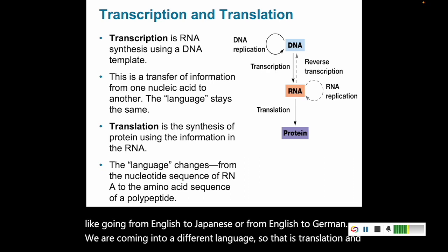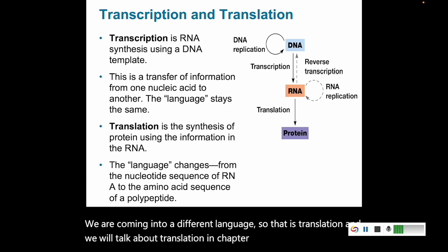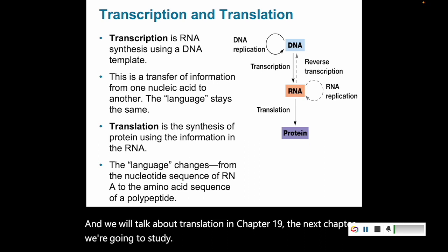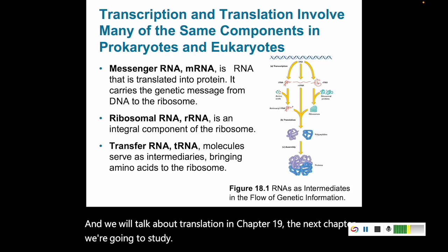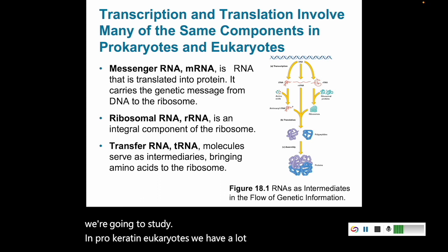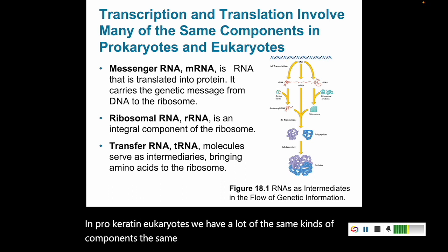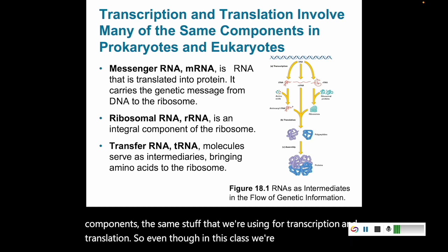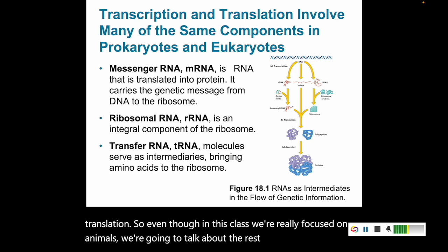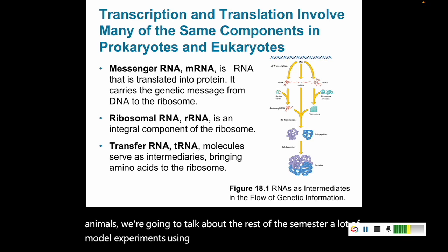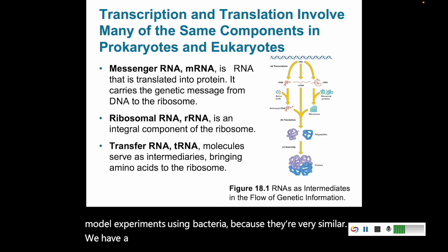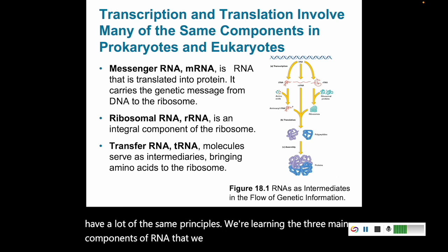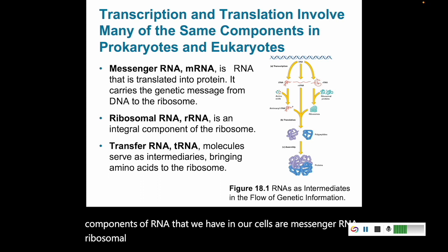We will talk about translation in chapter 19, the next chapter we're going to study. In prokaryotes and eukaryotes, we have a lot of the same kinds of components used for transcription and translation. Even though in this class we're really focused on animals, we're going to talk about a lot of model experiments using bacteria because they're very similar — we have a lot of the same principles. The three main components of RNA in our cells are messenger RNA, ribosomal RNA, and transfer RNA.